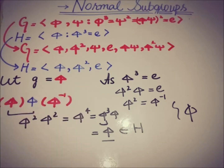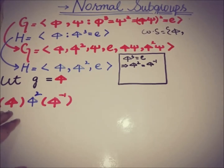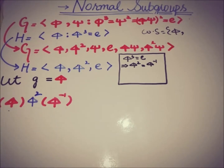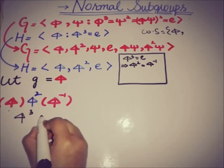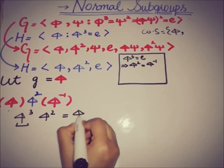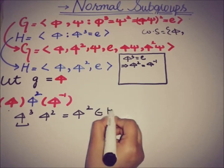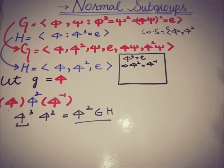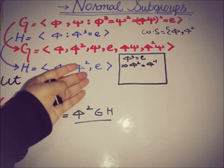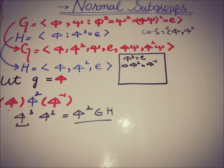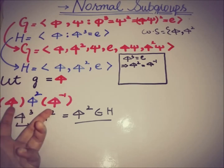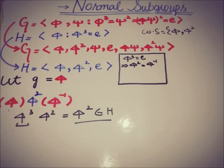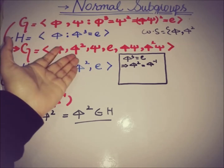Now for the second element of H, which is φ². With G still equal to φ: φ·φ²·φ-inverse = φ³·φ² = e·φ² = φ², which is also an element of H. We don't need to check for identity separately, since g·e·g-inverse = e, which is in every group and subgroup. So for G = φ, the conjugate subgroup coincides with H.